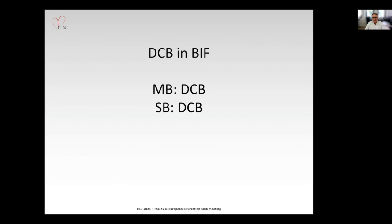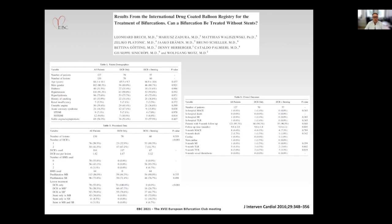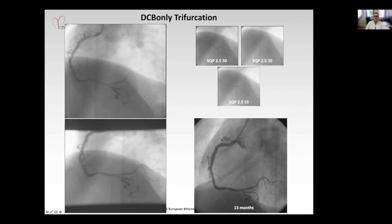The next approach is a more puristic approach — leaving nothing behind: main branch DCB and side branch DCB. For this approach, we have some case series of 39 patients reported, and registry data published by colleagues — 70 patients with DCB only in the bifurcation, 57 in combination with stenting. Looking at the nine-month MACE rate, these were very acceptable data: DCB only 6.1%, DCB plus stenting 7.3% event rate.